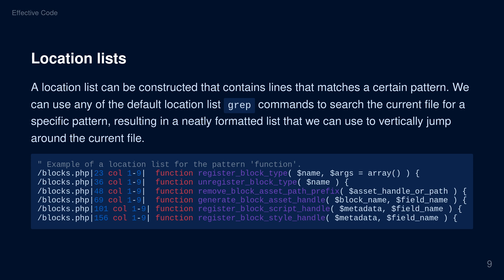4. Location lists. A location list can be constructed that contains lines that match a certain pattern. We can use any of the default location list grep commands to search the current file for a specific pattern, resulting in a neatly formatted list that we can use to vertically jump around the current file.